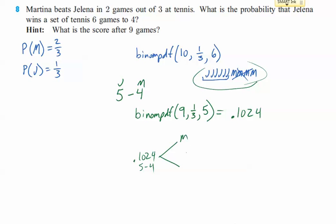Now, you've got Martina and Jelena. Jelena wins one out of three. Martina wins two out of three. And so, to get Jelena that last win, it would be 0.1024 times one-third.